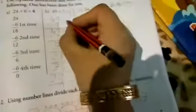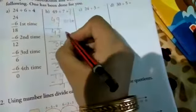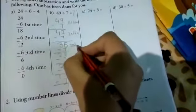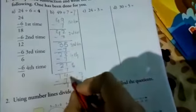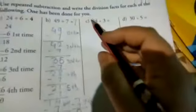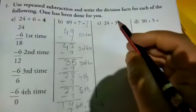First time, second time, third time, fourth time, fifth, sixth, and last seventh. 24 divided by 3.